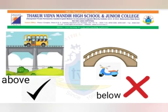Tick the vehicle above the bridge and cross the vehicle below the bridge. Here students, we will put a tick mark on the bus above the bridge, and put a cross mark on the scooter below the bridge.